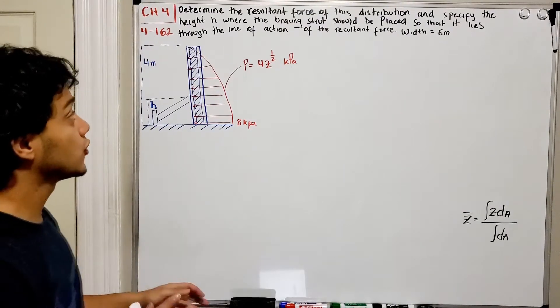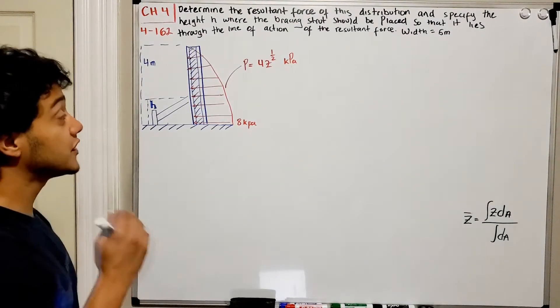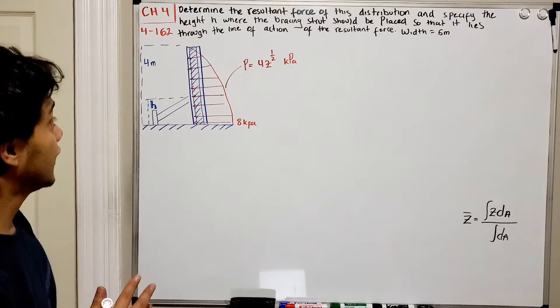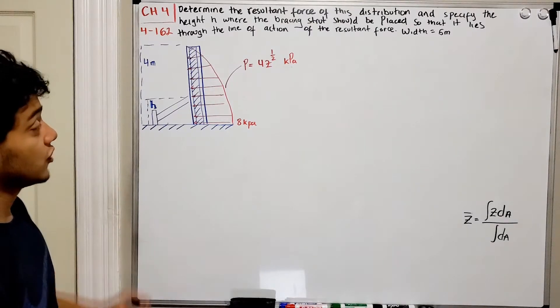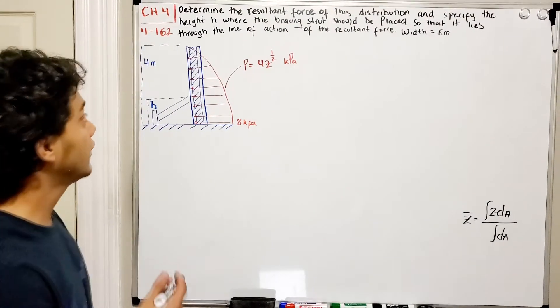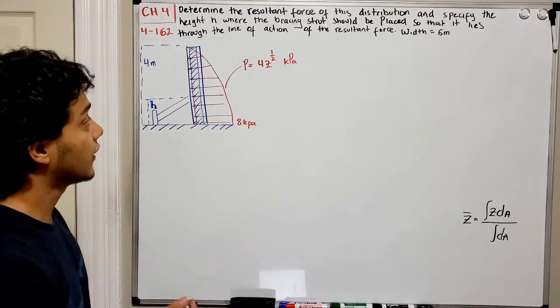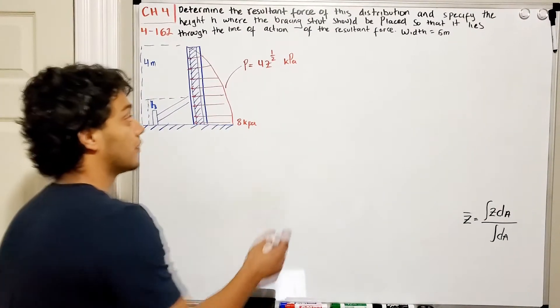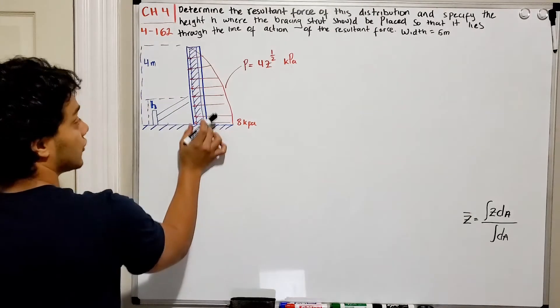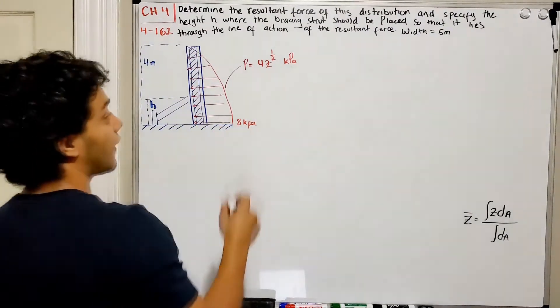It says, determine the resultant force of this distribution load and specify the height H, this guy over here, where the bracing structure should be placed so that it lies through the line of action of the resultant force. And they also tell you that the width of this concrete structure is equal to 5 meters.